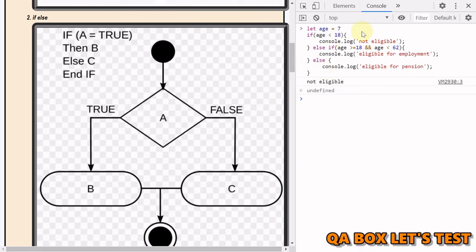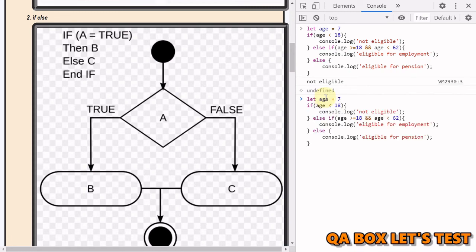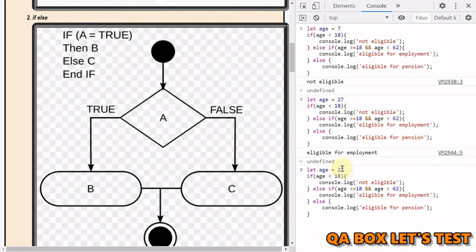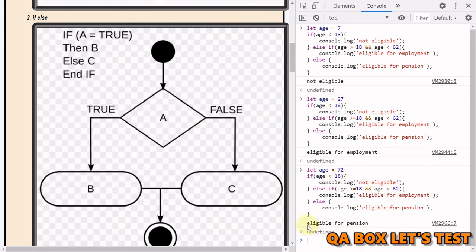If I change the age to 27, then you could see that eligible for employment because 27 is between 18 and 62. And if I change it further, I make it 72, then you could see that eligible for pension.